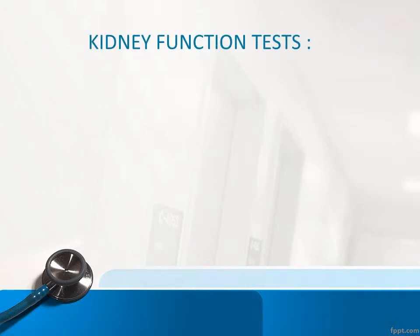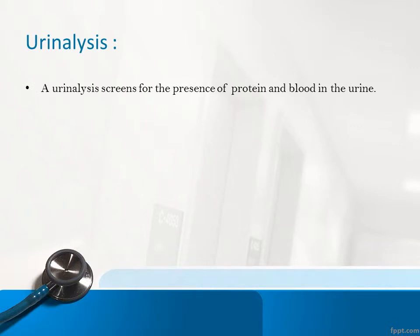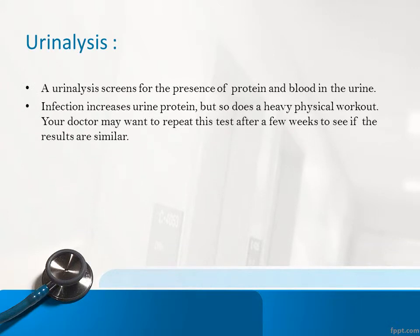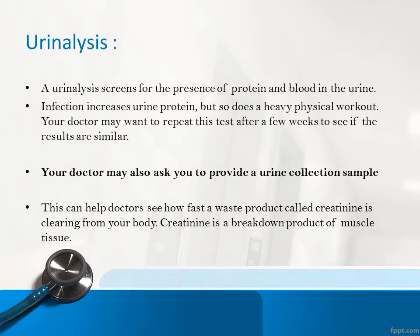Kidney function tests include Urinalysis, Serum Creatinine Test, Blood Urea Nitrogen, and Estimated GFR. Urinalysis screens for the presence of protein and blood in the urine. Infection increases urine protein, but so does physical exercise. A doctor may want you to repeat this test after a few weeks. Your doctor may also ask for a urine collection sample, which can show how fast a waste product called creatinine is clearing from your body. Creatinine is a breakdown product of muscle tissue.